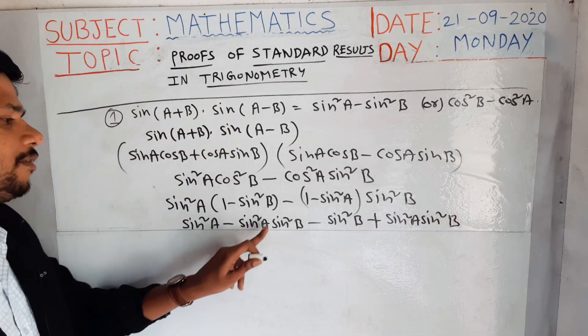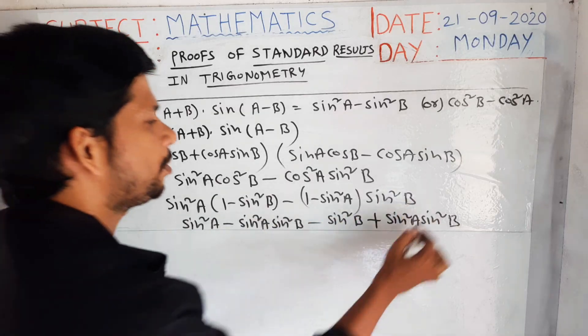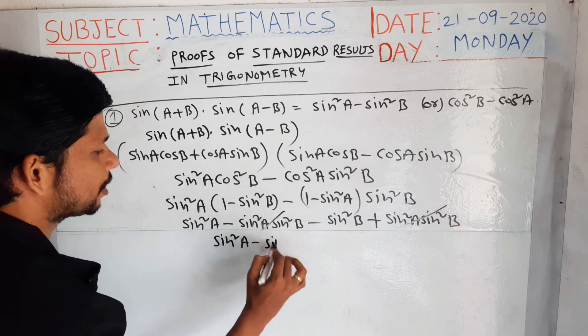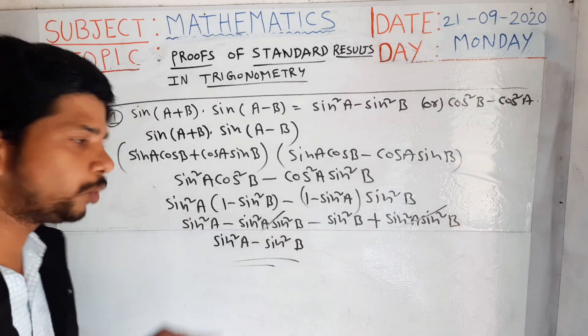Here, -sin²(a)sin²(b) and +sin²(a)sin²(b) get cancelled, so finally what I have is sin²(a) - sin²(b). Similarly, you can do...